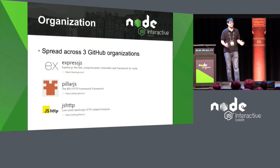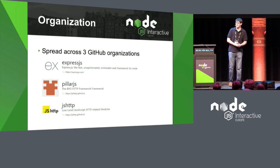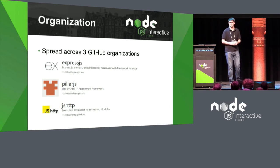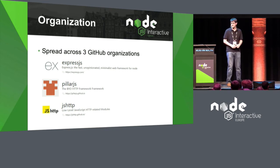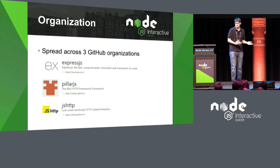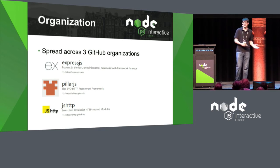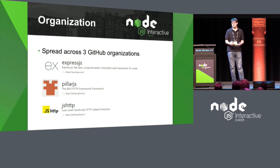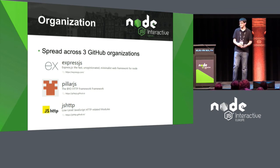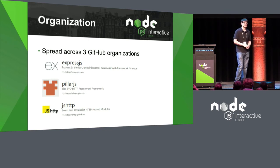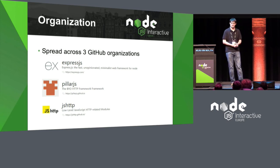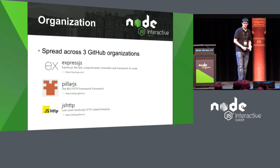Express is actually a fairly large project — composed of dozens of modules, all managed by the Express team, not including modules we just use that aren't managed by Express. Back in 2015 we decided it was getting really unmanageable being inside one GitHub org, so we actually split it among three orgs: the Express.js organization, the Pillar.js organization, and the JS HTTP organization — all on GitHub.